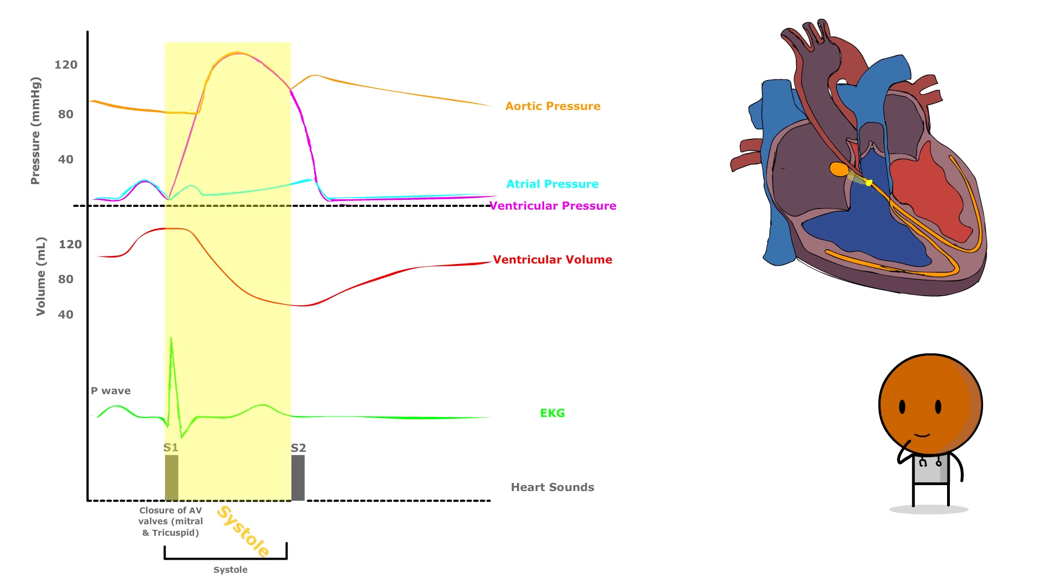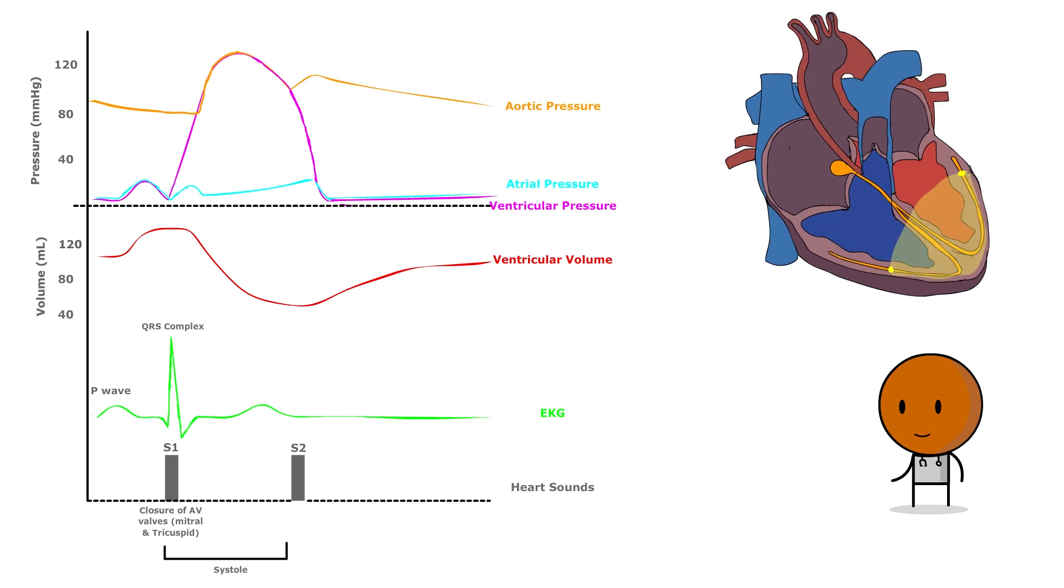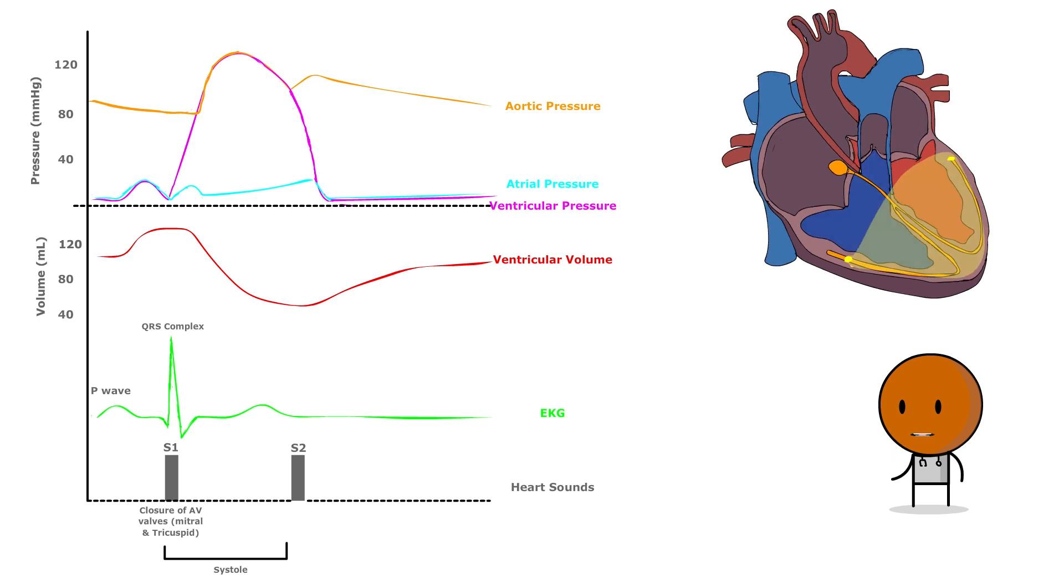Concurrently, the QRS complex on the EKG indicates the ventricles are midway through depolarization, beginning their contraction and swiftly increasing internal pressure, as we can see here.